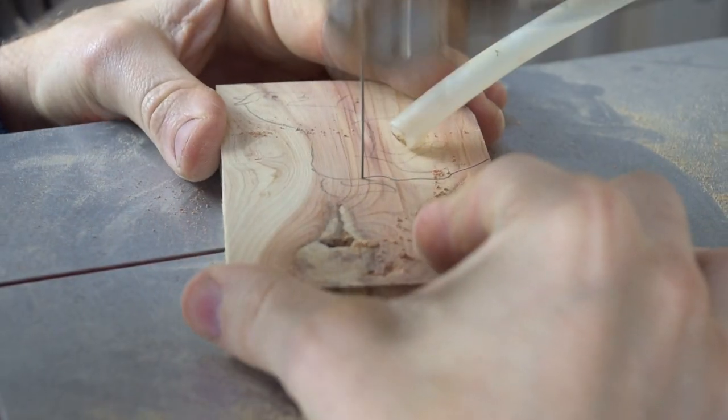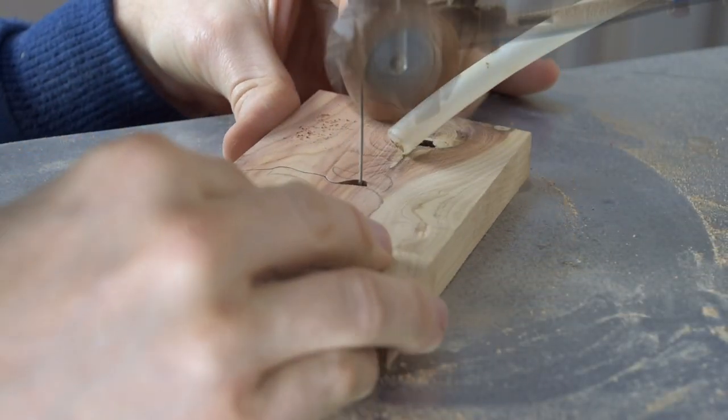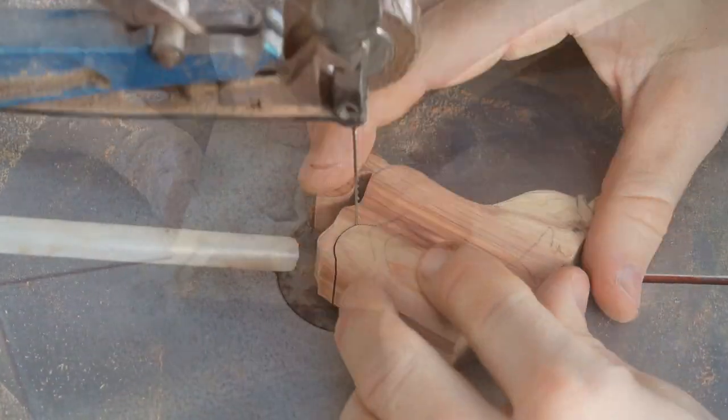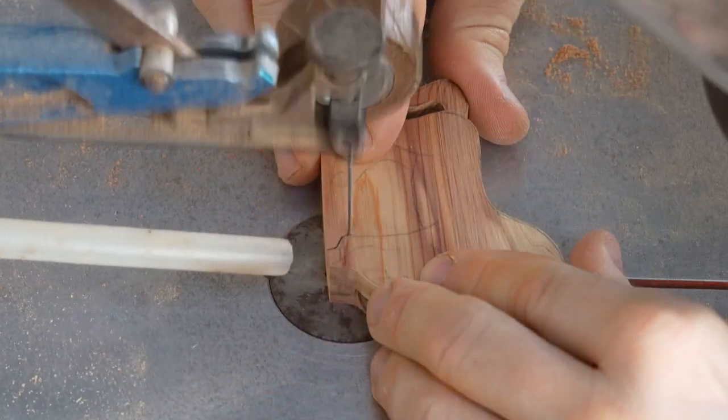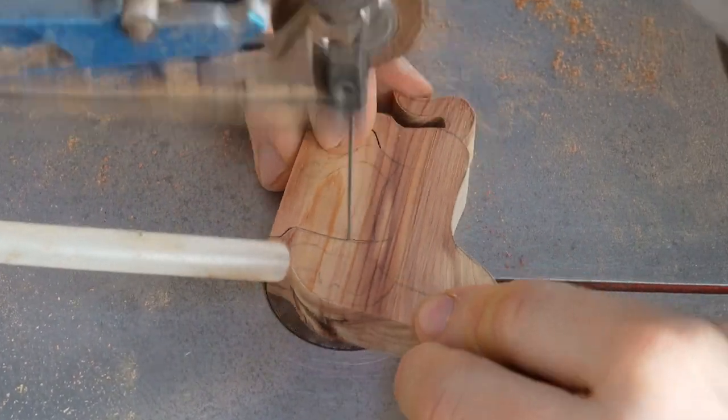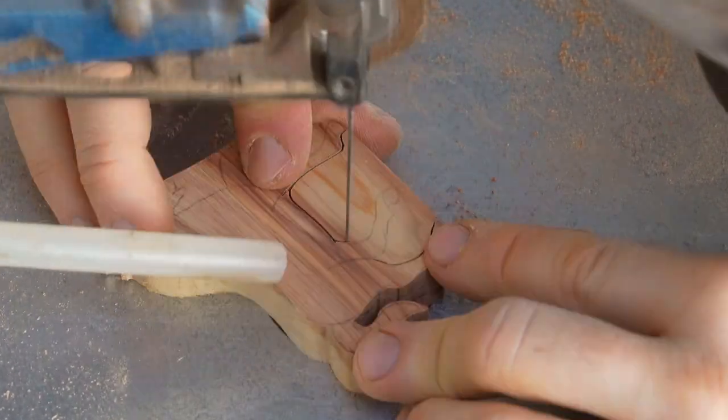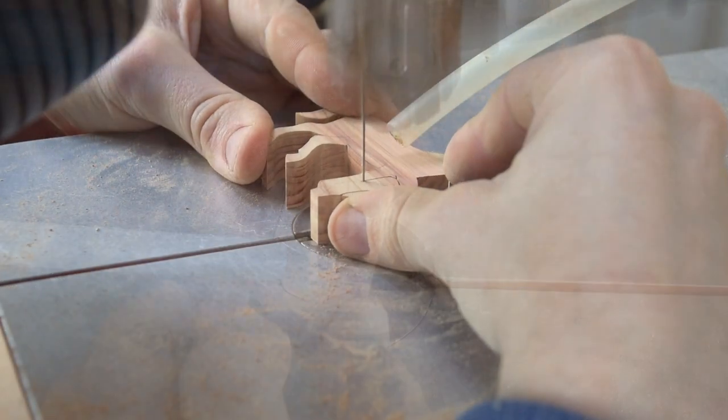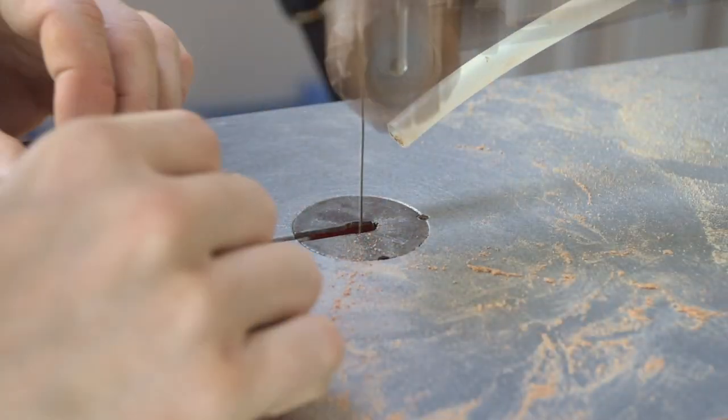So you can see now we're on to using our scroll saw. We're cutting out our basic shapes and to add a little bit of extra interest to this project we've used three different woods. The horse that is carrying our wagon has been cut out in juniper and juniper has that beautiful contrast between the heartwood and the sapwoods.